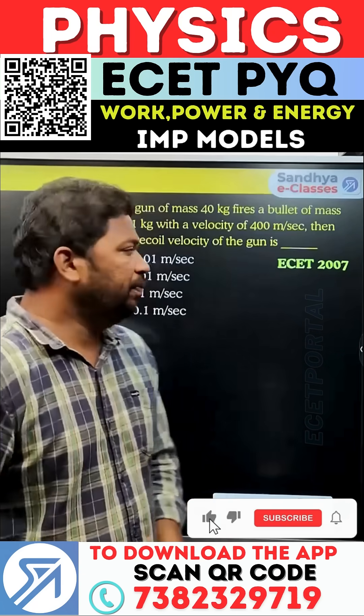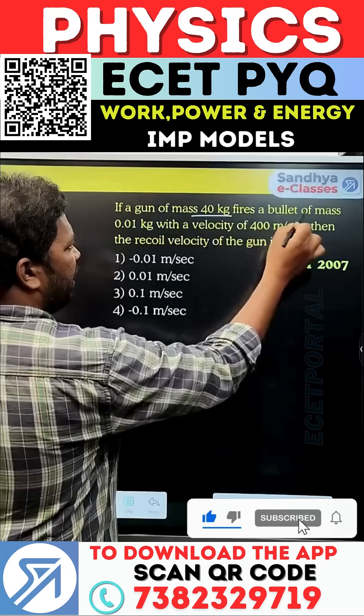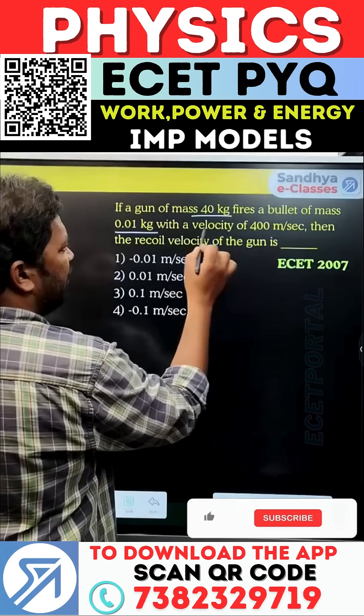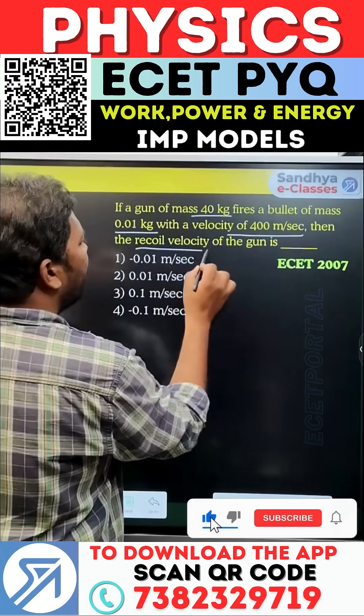For work, power, and energy, we will solve previous questions. If a gun of mass 40 kg fires a bullet of mass 0.01 kg with a velocity of 400 meters per second, then the recoil velocity of the gun is...